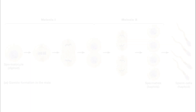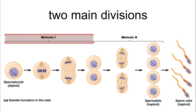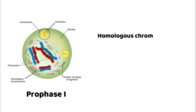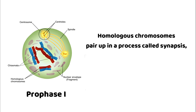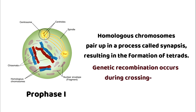The phases of meiosis. Meiosis consists of two main divisions: meiosis 1 and meiosis 2, each with distinct phases. Meiosis 1 — Prophase 1: homologous chromosomes pair up in a process called synapsis, resulting in the formation of tetrads. Genetic recombination occurs during crossing over.